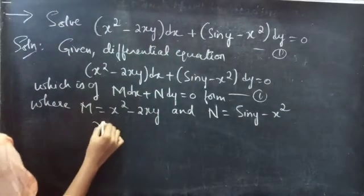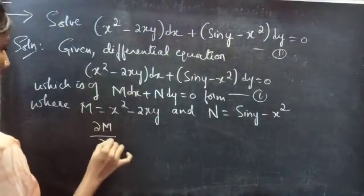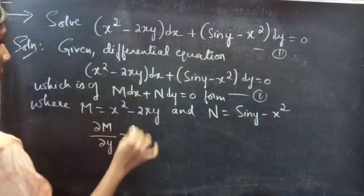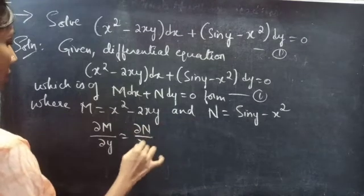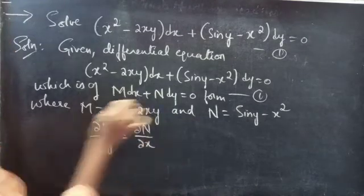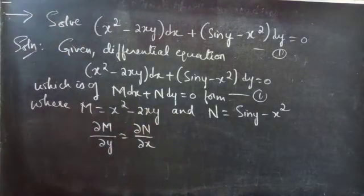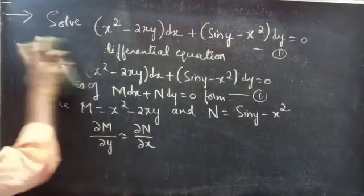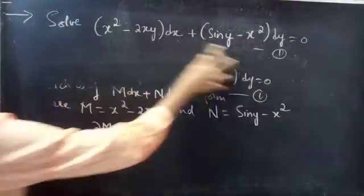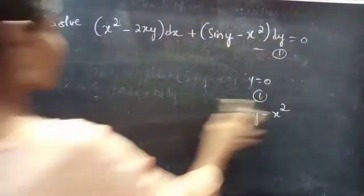If the partial derivative of M with respect to y is equal to the partial derivative of N with respect to x, then we can say that the given differential equation is an exact equation. So let's find the partial derivative of M with respect to y and the partial derivative of N with respect to x.